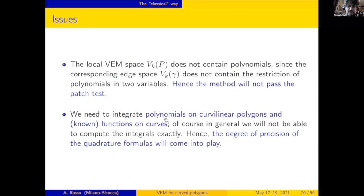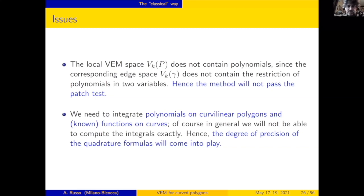If we do this, the local space does not contain polynomials since the edge space does not contain restrictions of polynomials. So the method will not preserve polynomials — it will not pass the patch test. If you have a polynomial solution, it will not be recovered. We also need to integrate polynomials on curvilinear polygons. I assume for now that everything is integrated exactly, just to start with.